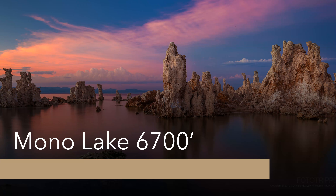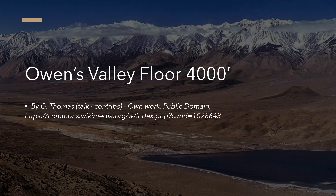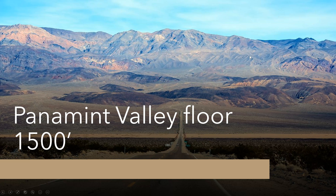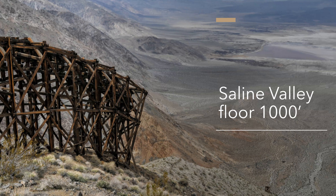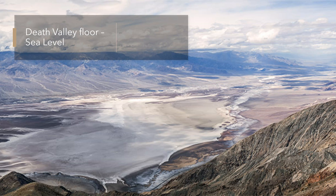Mono Lake sits at an elevation of 6,700 feet. The Owens Valley floor is at about 4,000 feet, with the Sierra Nevada in the background. The Panamint Valley floor is at 1,500 feet, Saline Valley floor at 1,000 feet, and the Death Valley floor is at sea level — except at Badwater Basin, which is below sea level.